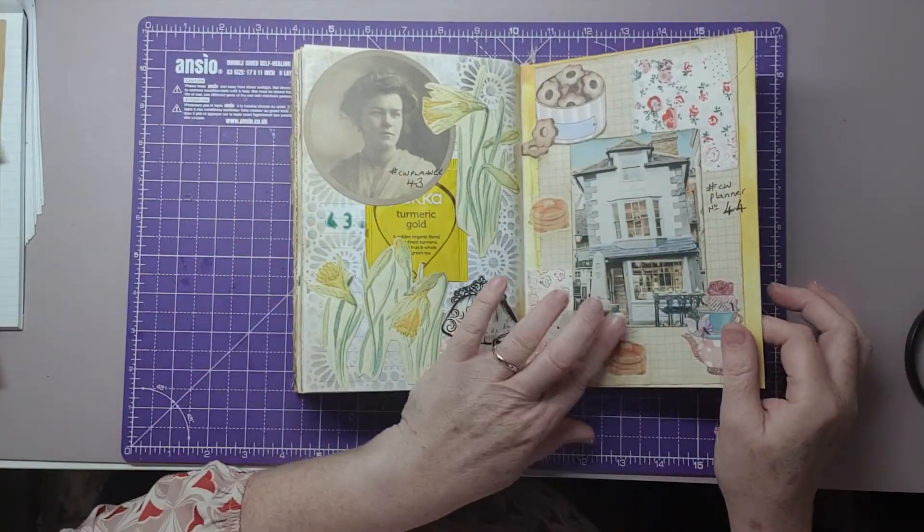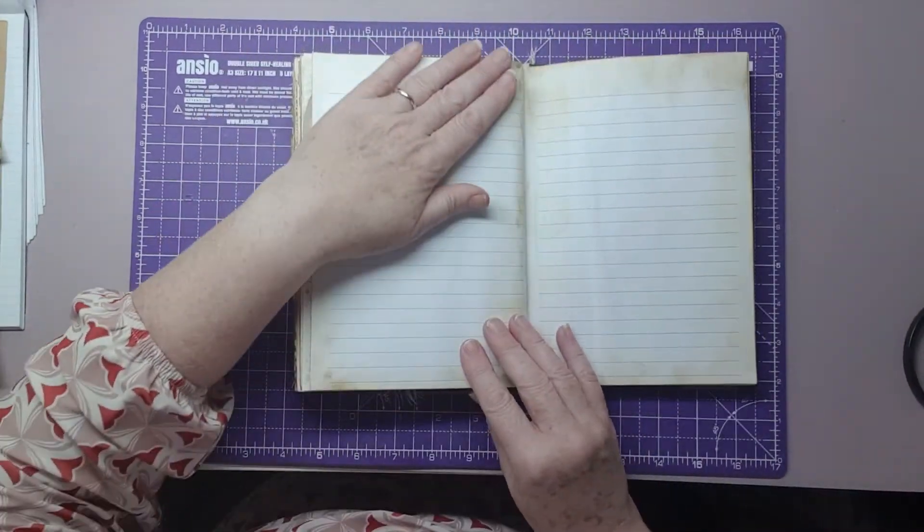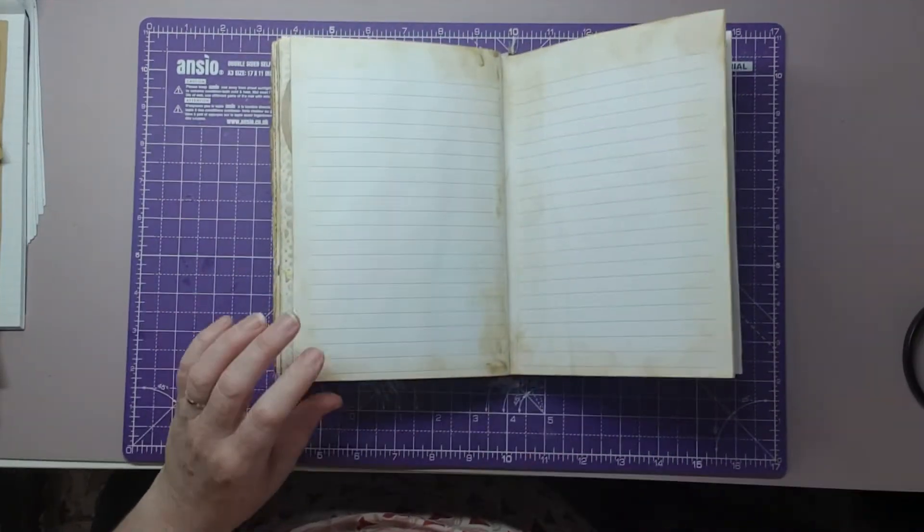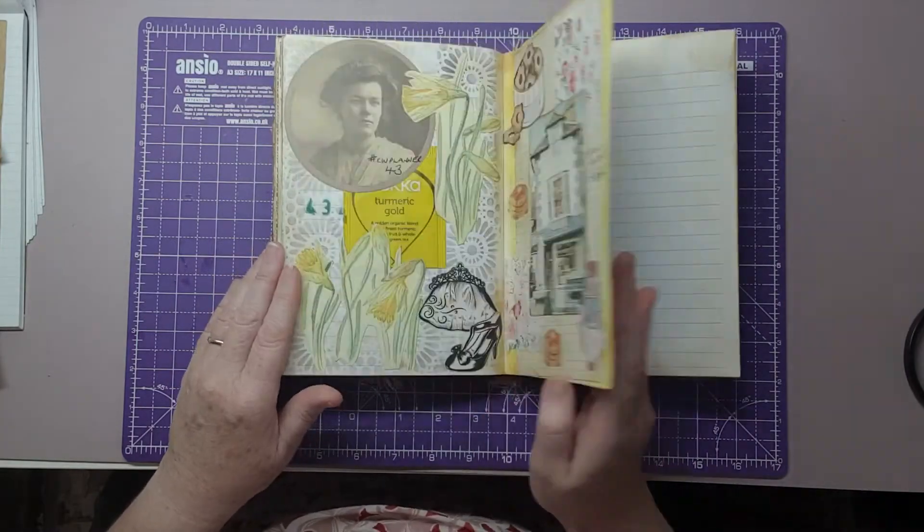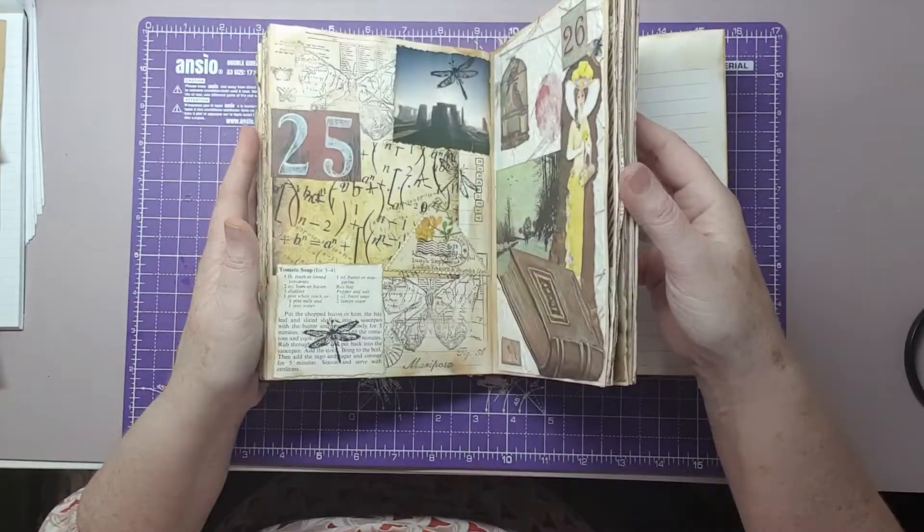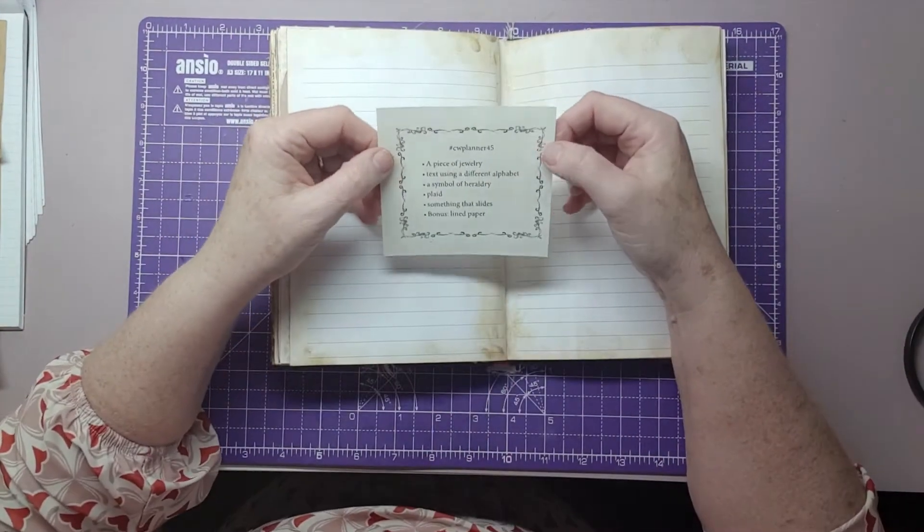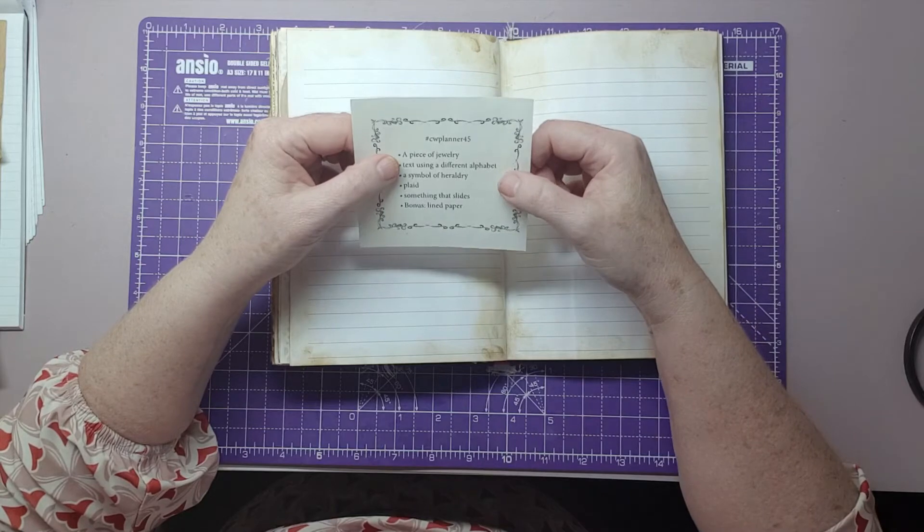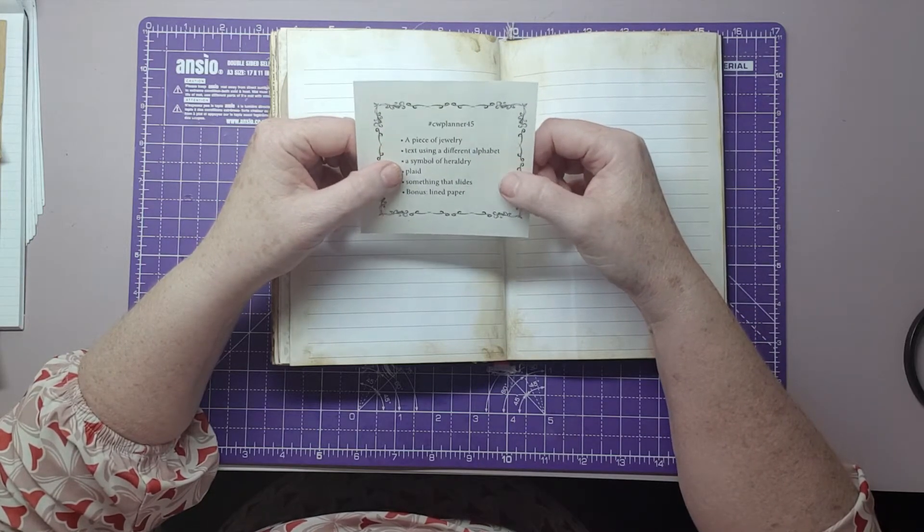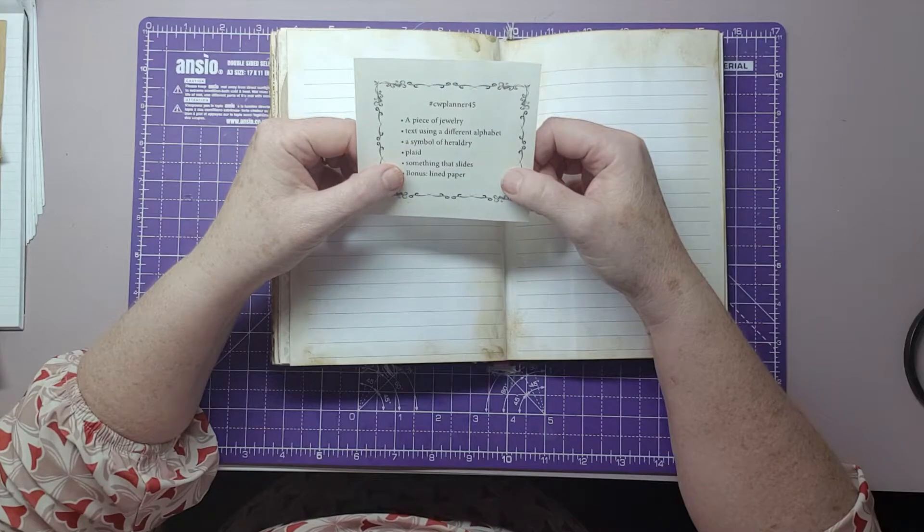So last time we did hashtag CW plan number 44, that was 43. Today we're doing 45, and I've already roughly prepared the paper because this is an A5 white lined paper notepad I've had for years. The five prompts are: a piece of jewellery, text using a different alphabet, a symbol of heraldry, plaid, something that slides, and the bonus is lined paper.